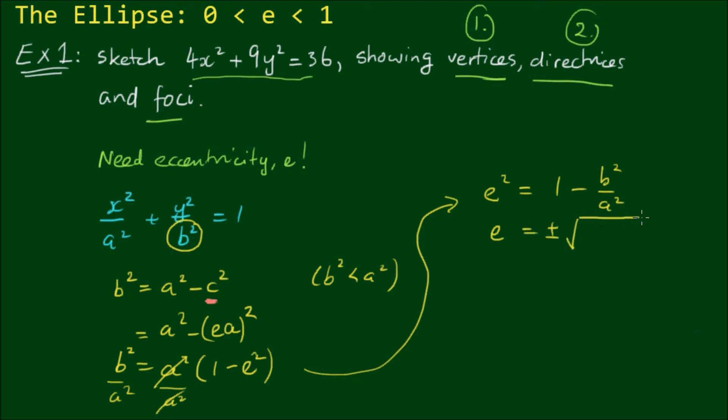So algebraically, it is correct to say plus or minus the square root of (1 minus b²/a²). But eccentricity can only be a positive number. So that means we'll just take the positive solution and we'll discard the negative one.